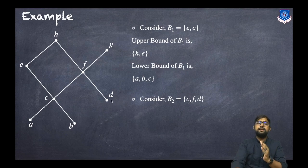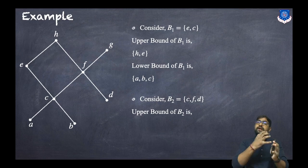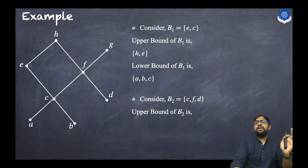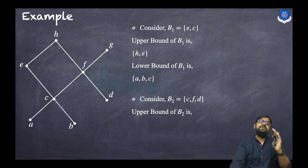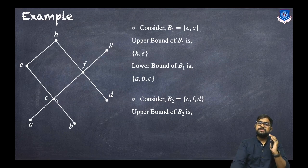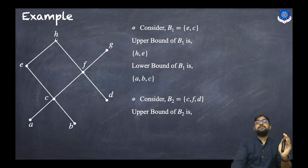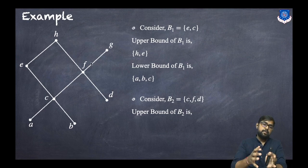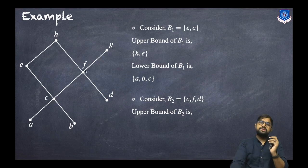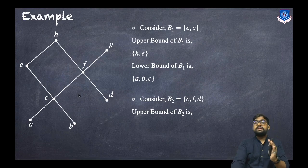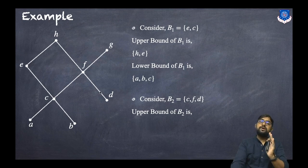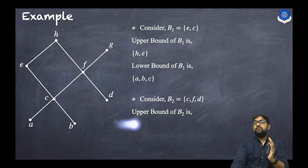Now let's discuss another set: B2 = {C, F, D}. The upper points are E, H, and G. For E — can we go from F to E? No, that requires going downward, so E is cancelled. For H — can we go from C to H? Yes. From F to H? Yes. From D to H? Yes. So H is an upper bound. For G — can we go from C, F, and D all to G? Yes — for example C to F then F to G. So G is also an upper bound. Considering the set elements, F is an upper bound since we can go from C to F, D to F, and F to F. So the upper bounds are H, G, and F.